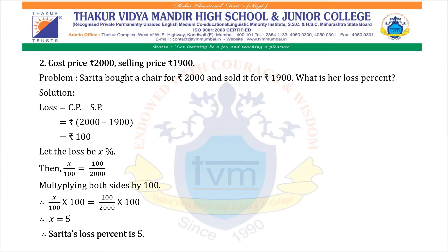Second, cost price is Rs. 2000 and selling price is Rs. 1900. Children, here you can use any name and any article — only the cost price and selling price should be same. Problem: Sarita bought a chair for Rs. 2000 and sold it for Rs. 1900. What is her loss percent? Solution: Loss = CP − SP = 2000 − 1900 = Rs. 100. Let the loss be X percent. Then X/100 = 100/2000. Multiplying both sides by 100, X = 5. So Sarita's loss percent is 5.